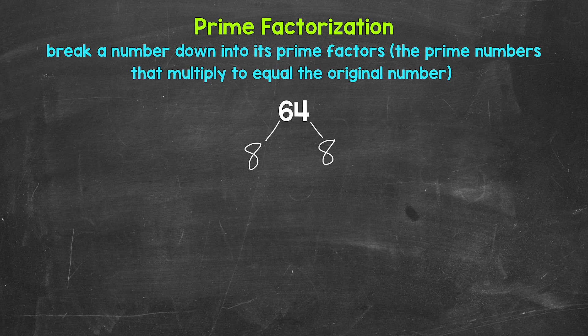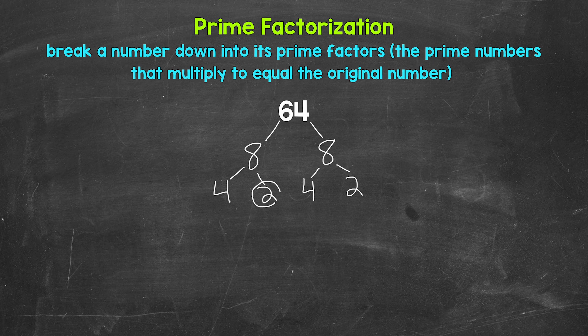So let's continue to break this down. We have 8 and 8. 8 is a composite number, so we can break 8 down. We need to think of factors of 8. Well, 4 and 2 are factors of 8 — 4 times 2 equals 8 — so let's break these 8s down into 4 and 2. Now 2 is a prime number, so we are done there. We cannot break those down any further, so let's circle those to show that we have prime numbers.